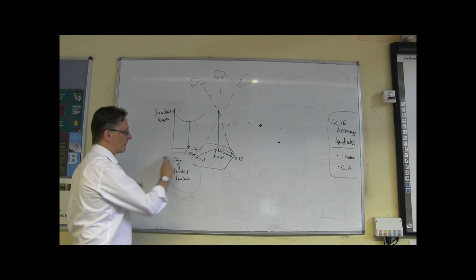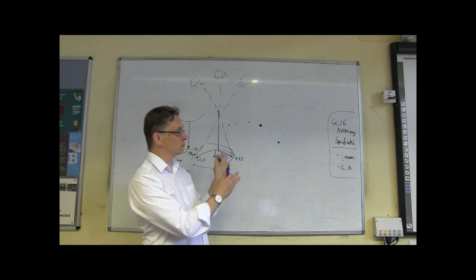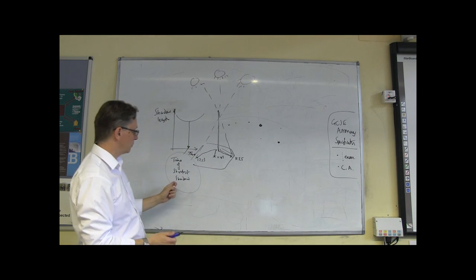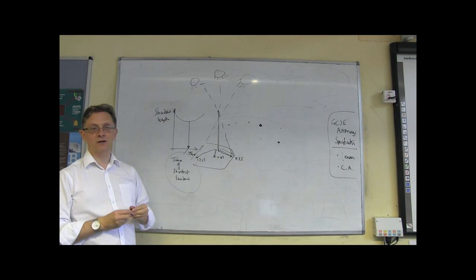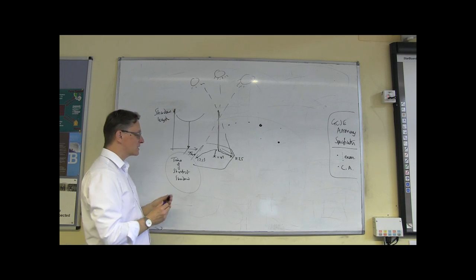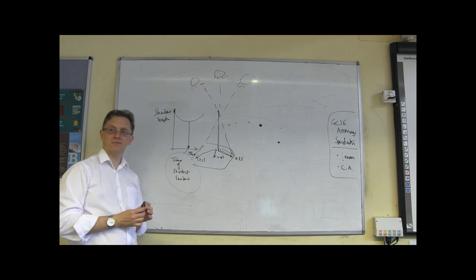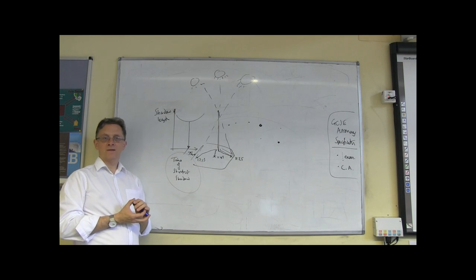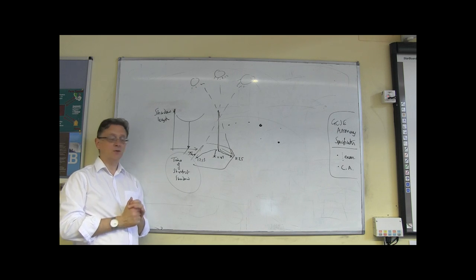So it's as simple as that. You go outside, put a stick in the ground, record shadow length, and work out the time of shortest shadow. What is this time of shortest shadow known as? In simple terms, we call it noon.